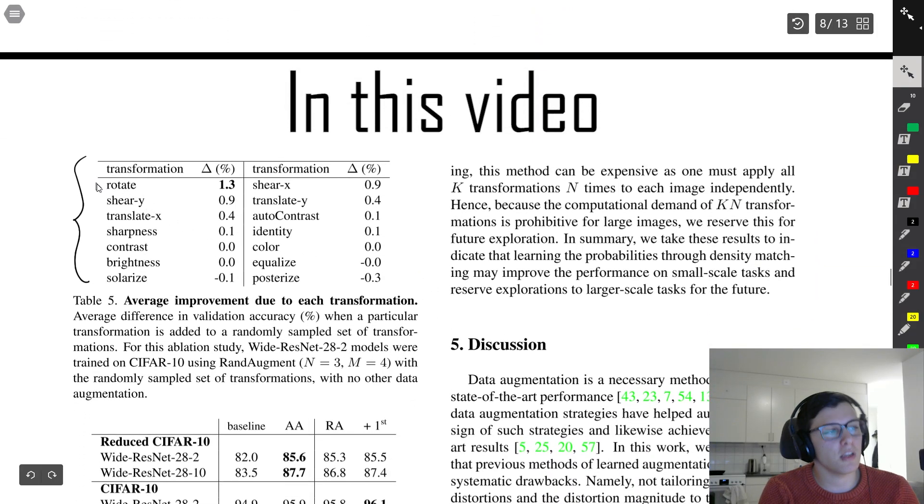Another thing that's pretty interesting is that they also checked which transformations were most important and found that rotation, shearing, and translation were best associated with an increase in validation accuracy.